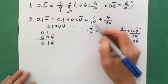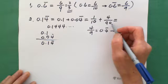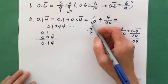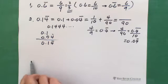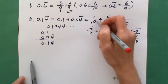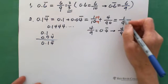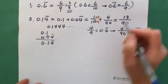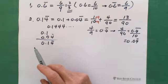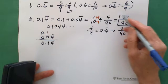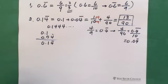Once you understand that, you add 1 over 10 plus 4 over 90. The common denominator is 90. You multiply 9 to the top and bottom of the first fraction, giving you 9 plus 4 equals 13. So the answer for 0.14 repeating is 13 over 90. Because 13 is a prime number, there's nothing to simplify.